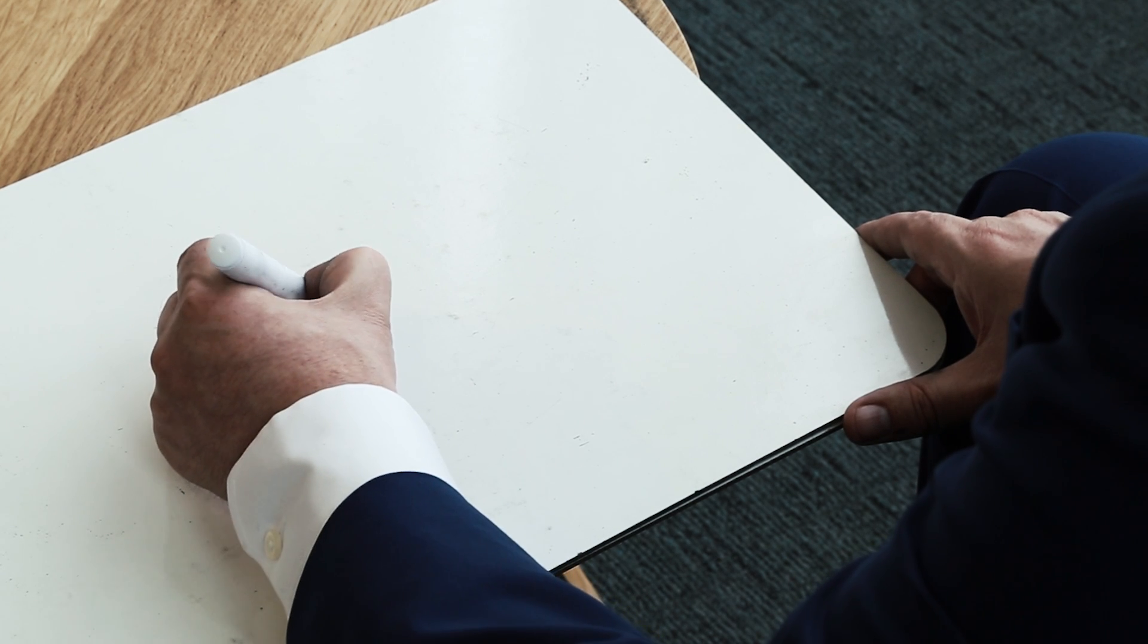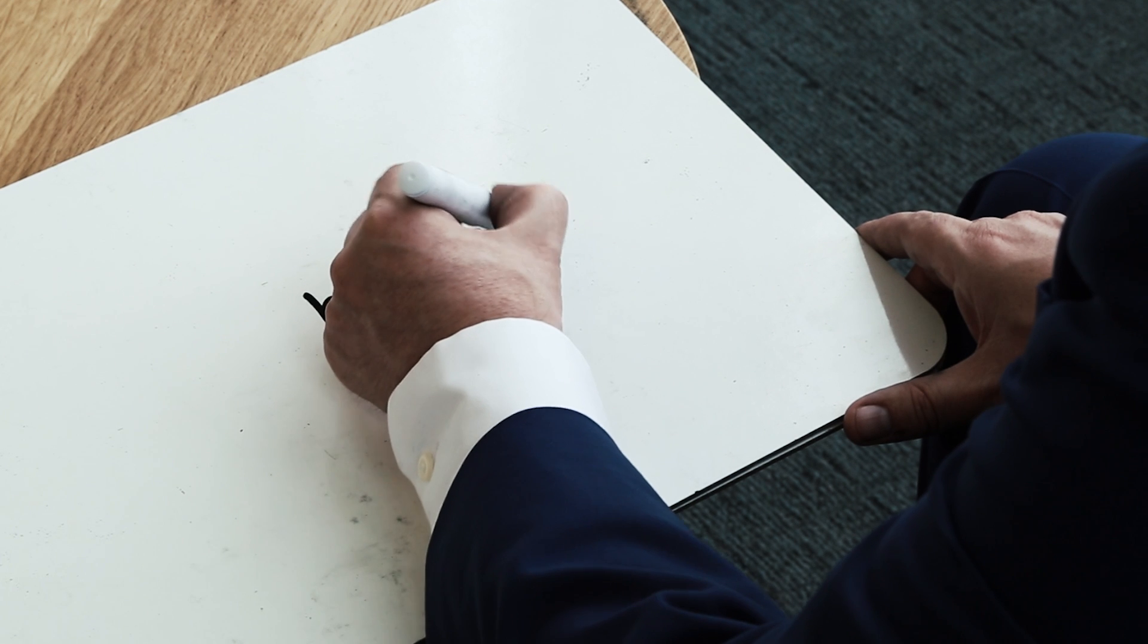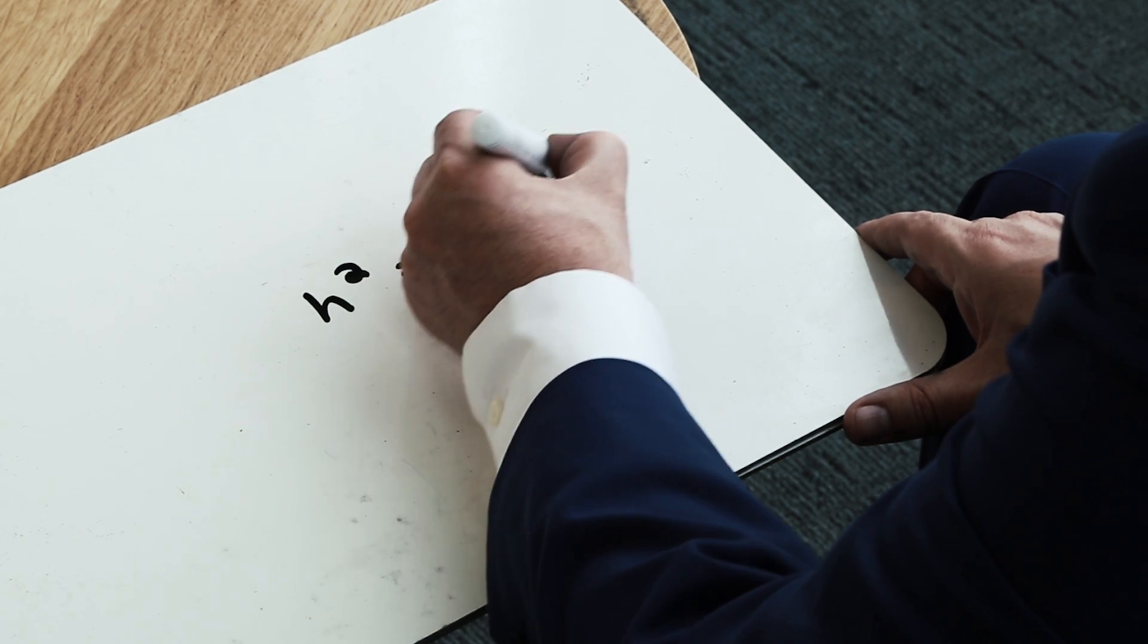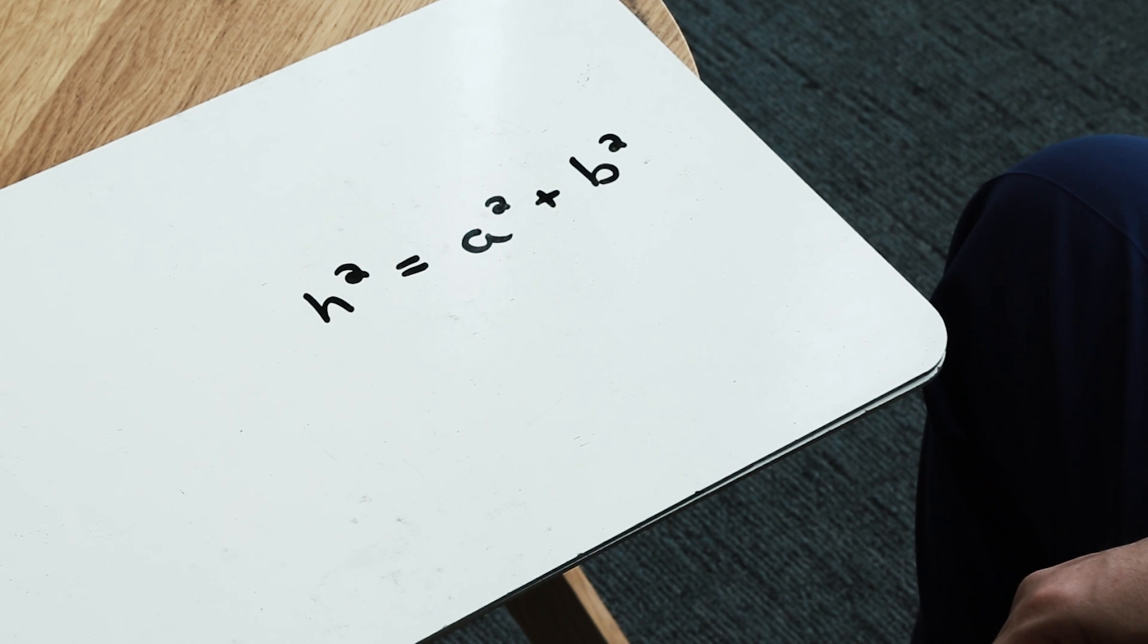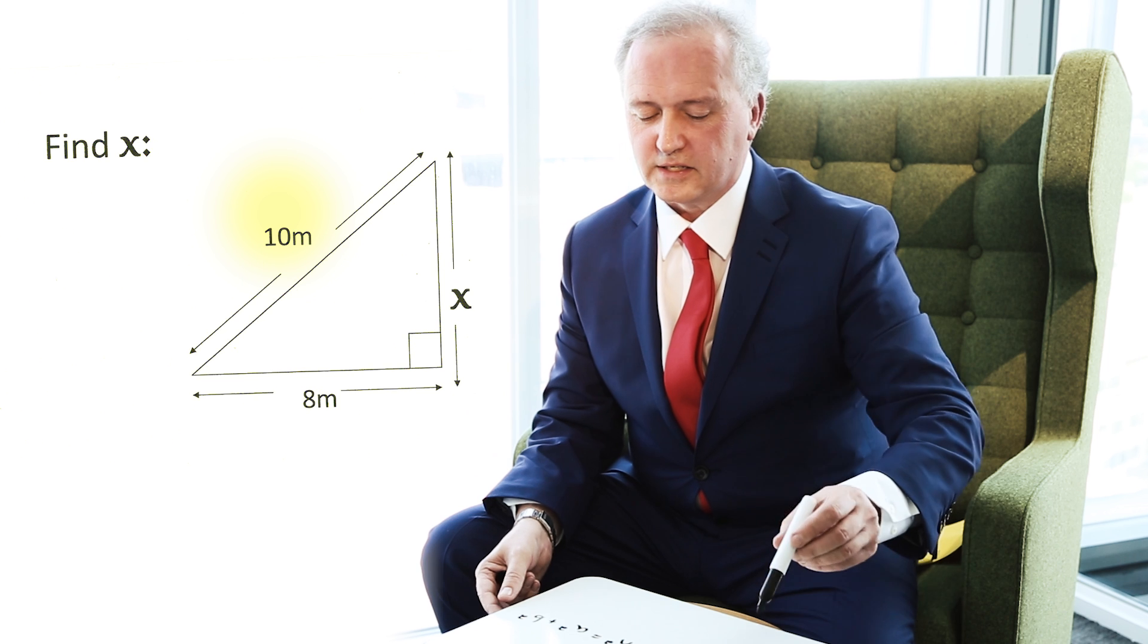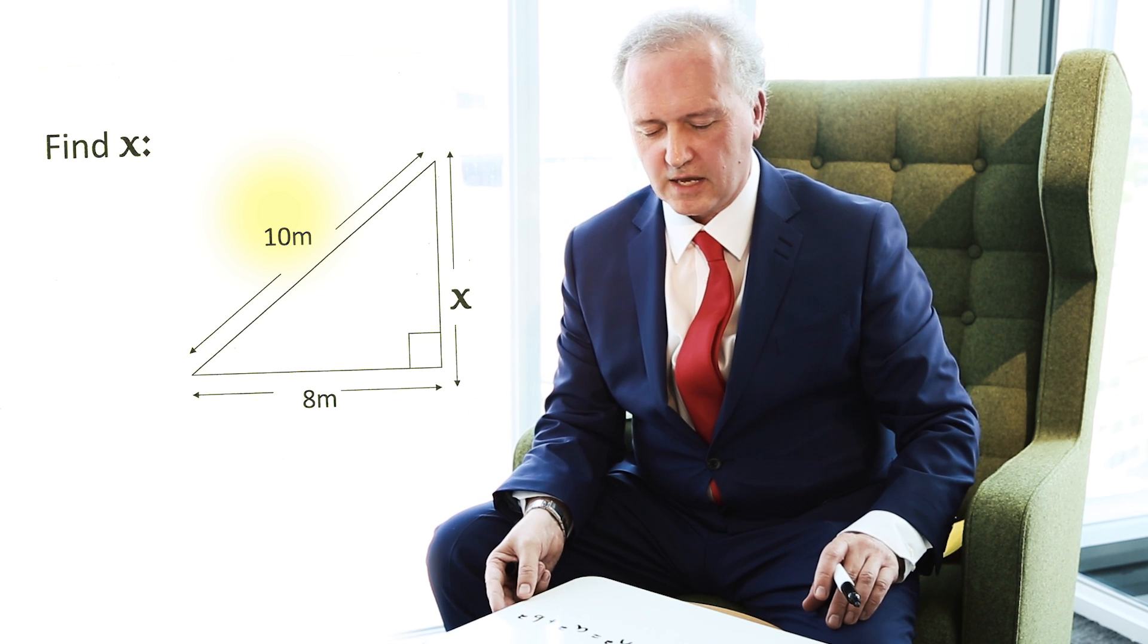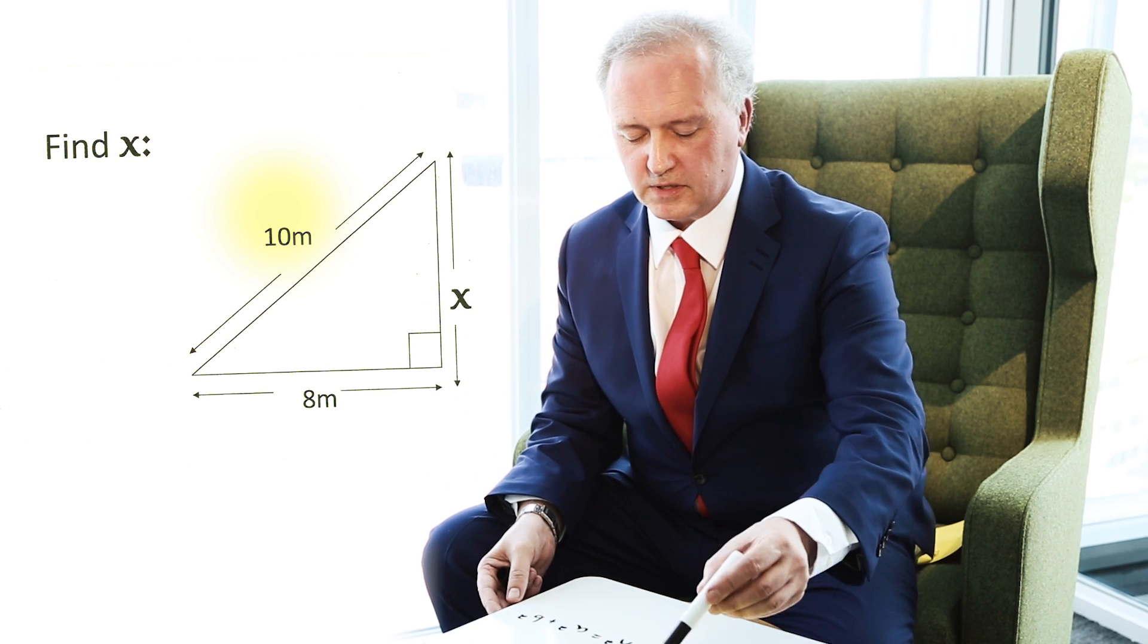I state my formula, I state that h squared is equal to a squared plus b squared, just like Pythagoras wanted us to do all those years ago. But then I just pause for a moment and I say to myself, well actually, I'm actually given the longest side already, so I've got to be really careful at the outset.